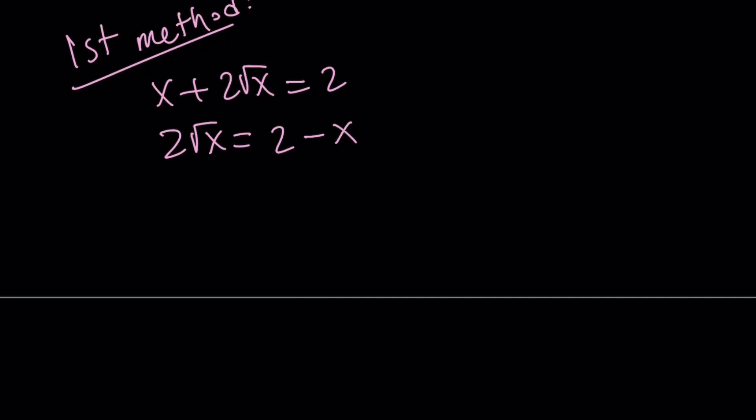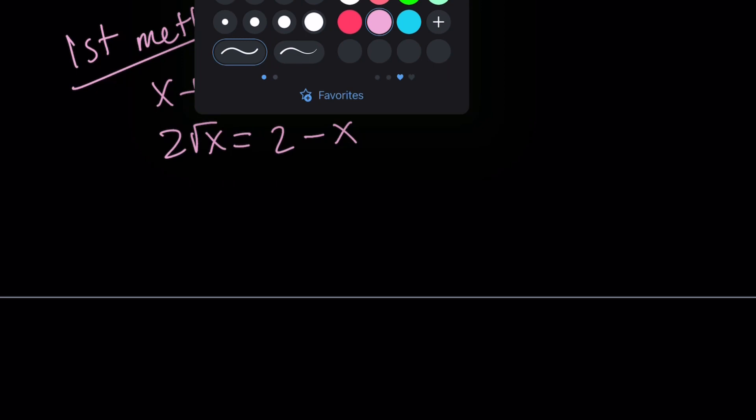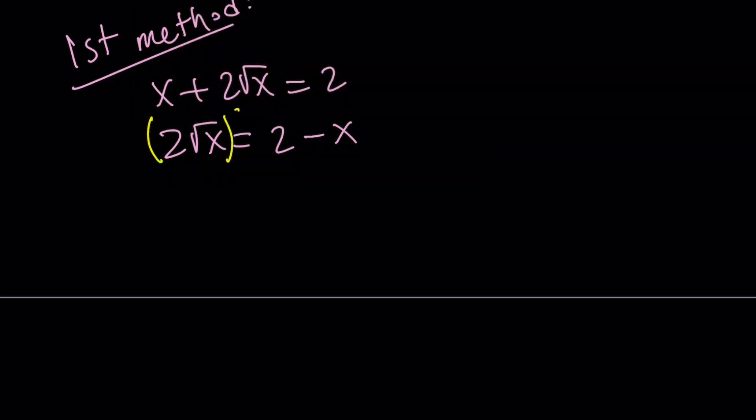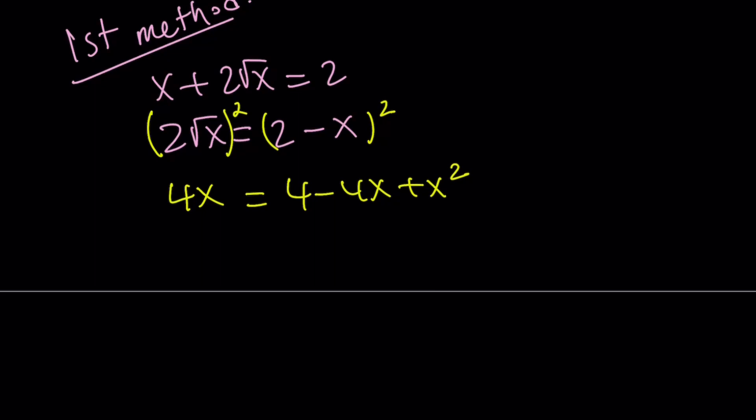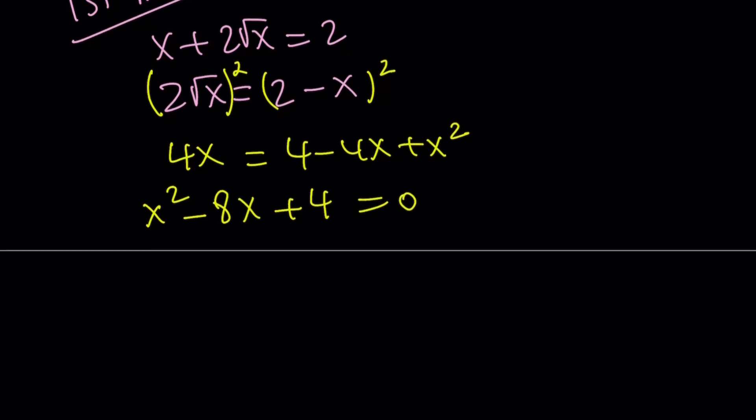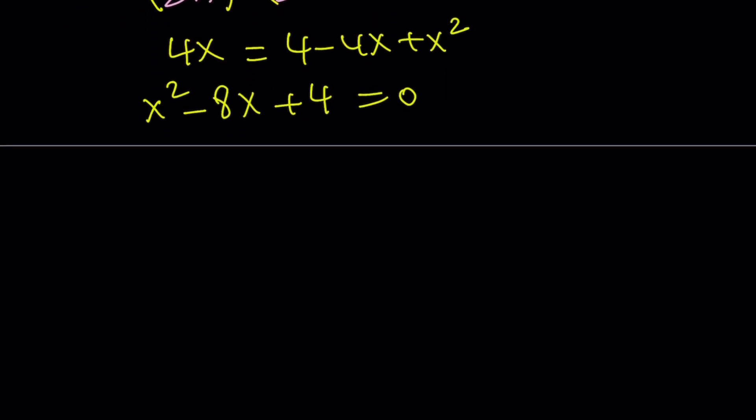With most radical equations, we square both sides. That makes sense. Let's go ahead and do it here. This gives us 4x equals 2 minus x quantity squared, which can be written as 4 minus 4x plus x squared. Unfortunately, the 4x doesn't cancel out. Let's go ahead and put everything on the right-hand side and then put that on the left-hand side. So in other words, subtract 4x.